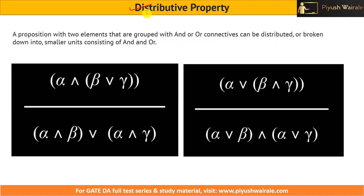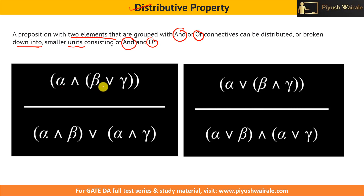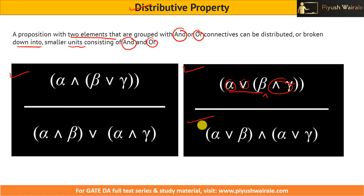The distributive property: a proposition with two elements grouped with and or or connectives can be distributed into smaller units. So alpha and (beta or gamma) becomes (alpha and beta) or (alpha and gamma). Similarly, alpha or (beta and gamma) becomes (alpha or beta) and (alpha or gamma). This is the distributive property we discussed in the previous lecture.